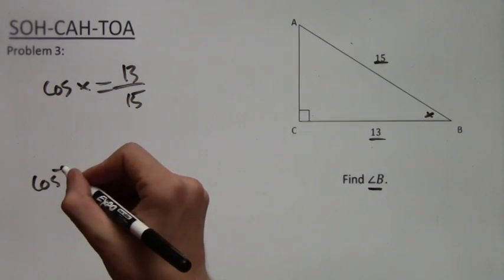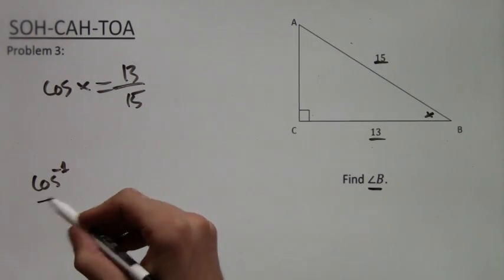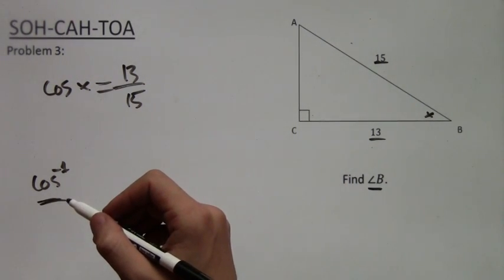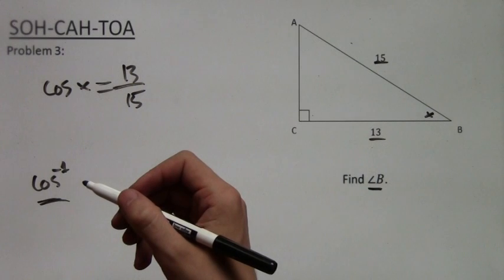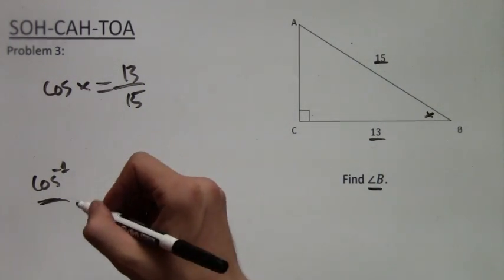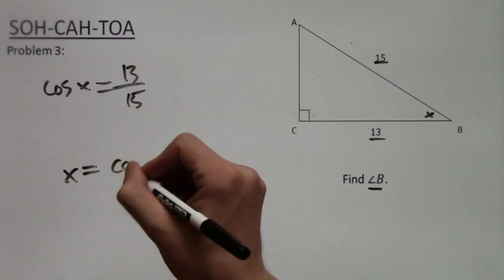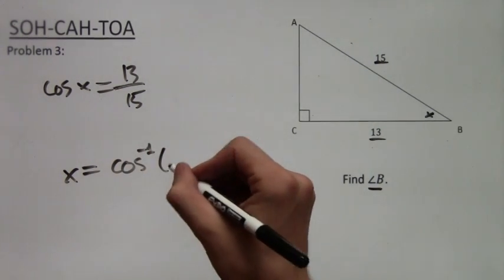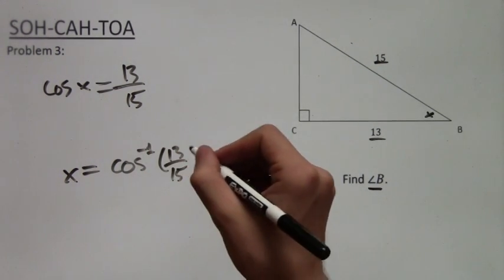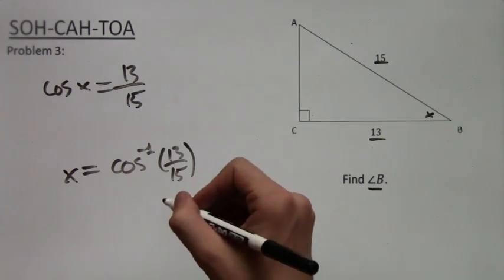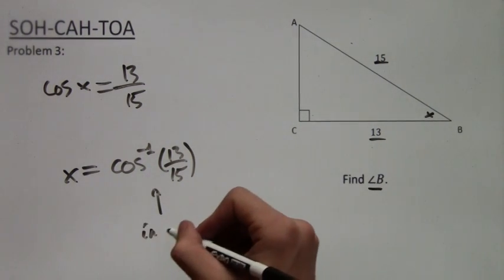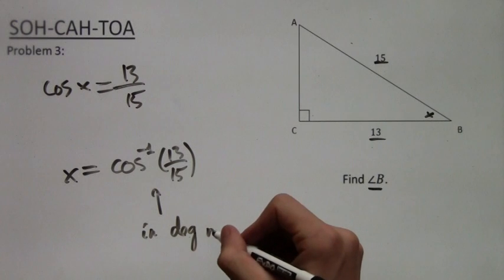Now in this case, your calculator should have a cosine inverse button somewhere. And the cosine inverse is kind of like if you had X squared equals to something, you could take the square root on both sides. If you have cosine of X equals something, you can take the cosine inverse of both sides. So when you take the cosine inverse of both sides, you get X equals cosine inverse of 13 over 15.